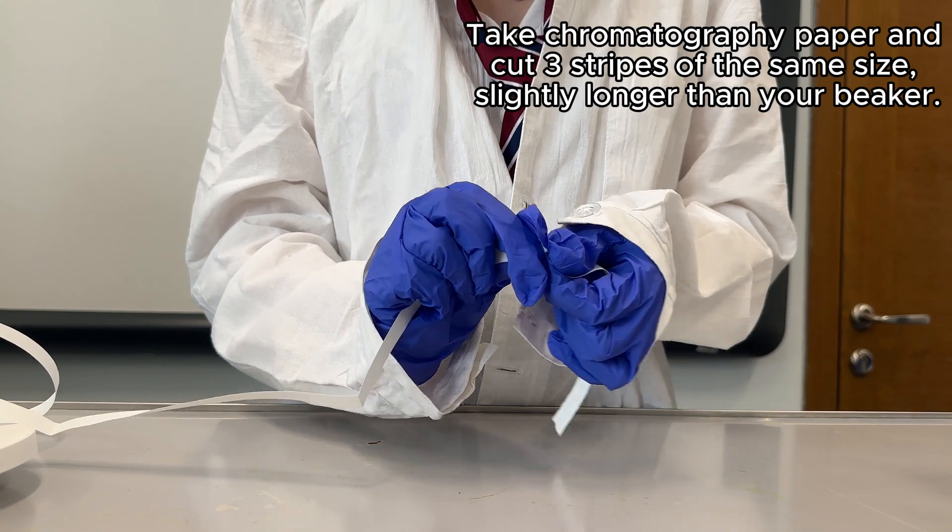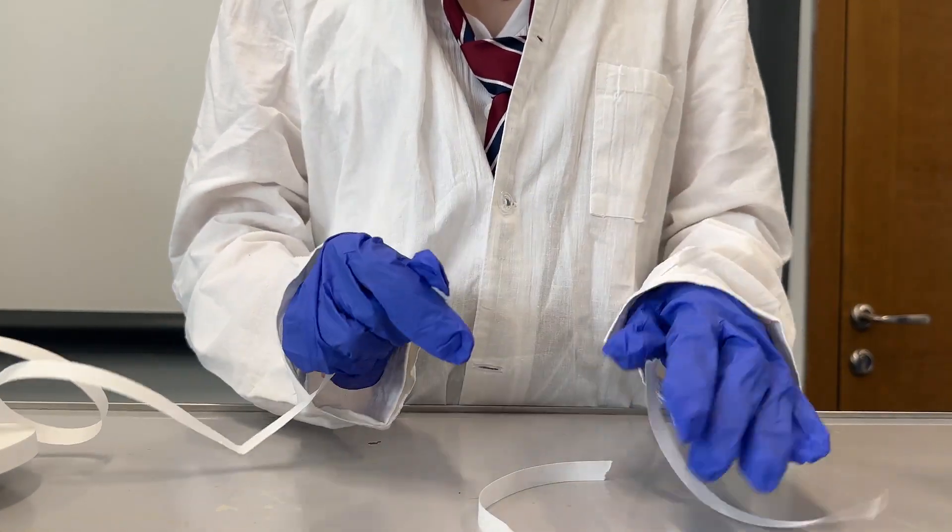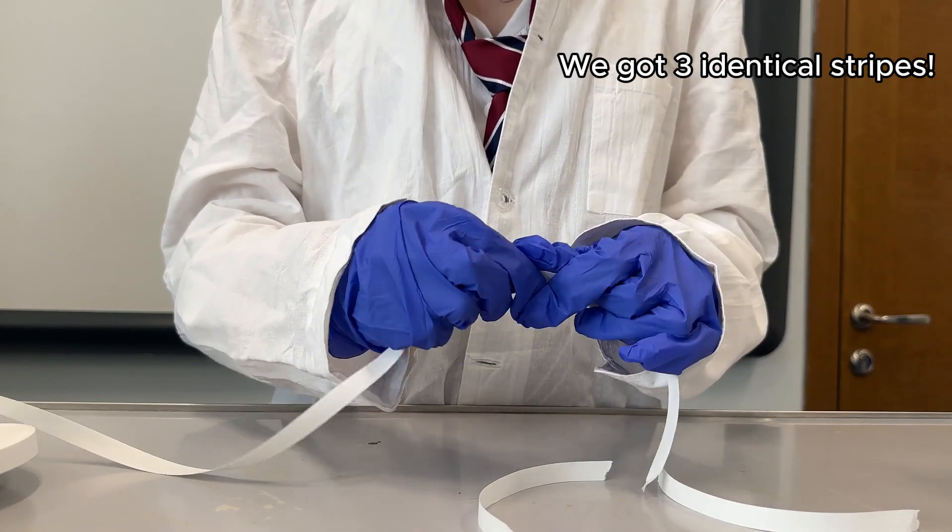Take chromatography paper and cut three strips of the same size slightly longer than your beaker. We got three identical strips.